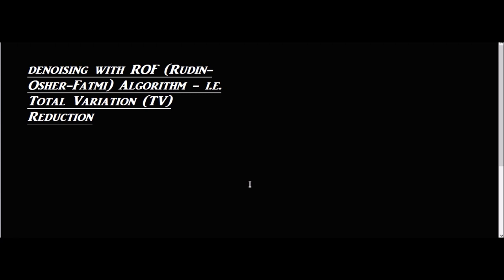In image processing, denoising functionally looks like we are smoothing out an image. Under certain interpretations of denoising, we can make a connection between denoising and what's called total variation — the variation of the image gradient across the image domain. One common way to denoise an image is using the so-called ROF algorithm, which stands for Rudin, Osher and Fatemi. This algorithm basically works by a type of total variation reduction.